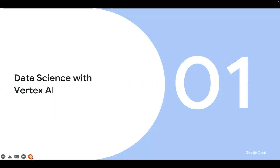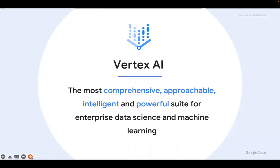The first part is data science with Vertex AI. Vertex AI is the most comprehensive, approachable, intelligent, and powerful suite for enterprise data science and machine learning. Data science and machine learning are two different verticals but work together hand in hand. People working in data science may also work in machine learning and vice versa. There are varieties of tools used in both fields, and they are trying to create a comprehensive platform helpful for both areas.